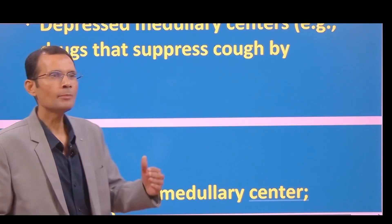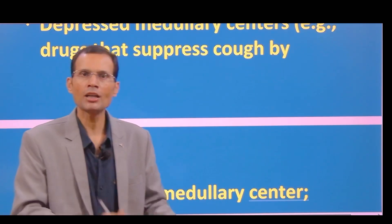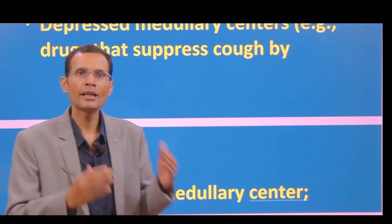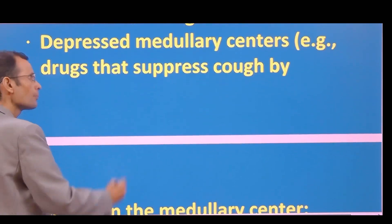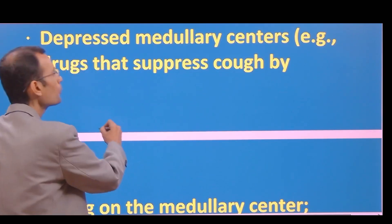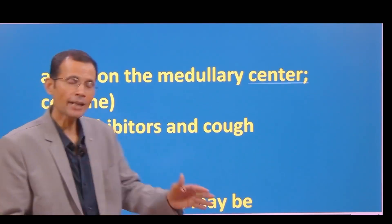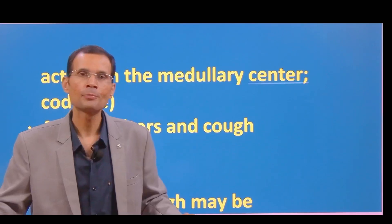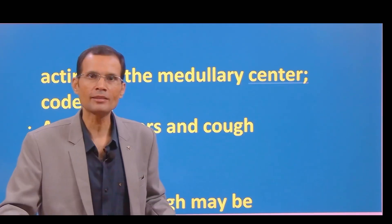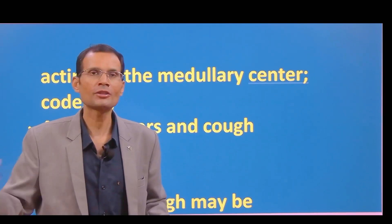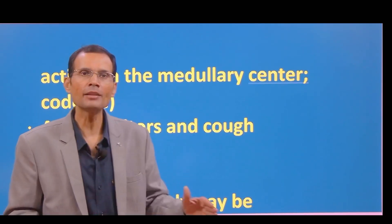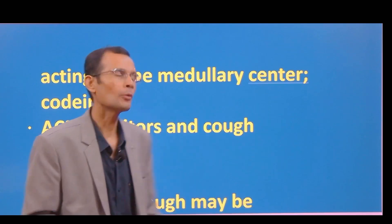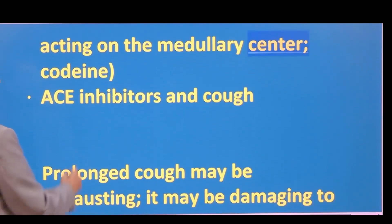Sometimes the cough may be very irritating — a dry cough, particularly during sleeping hours. Therefore, certain drugs can be given to suppress the medullary cough centers. Opioids or codeine, for example, act on the medullary center and suppress the cough. But remember, cough is of two types — dry cough and productive cough. A productive cough should not be suppressed; it should actually be promoted. But a dry, hacking cough should be suppressed so that it's not irritating, particularly during night hours.